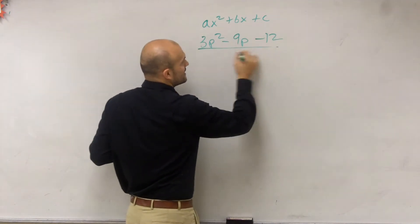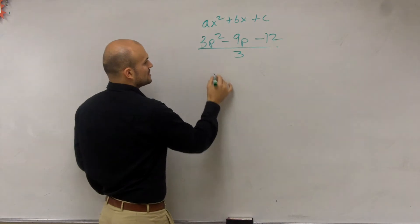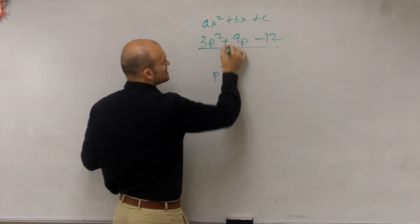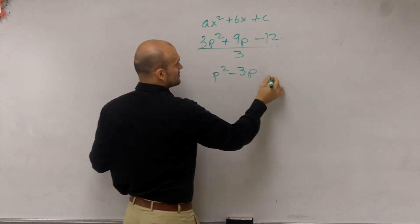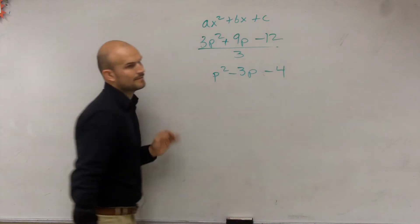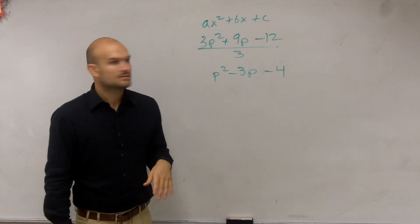So what I can do is I can divide everything by three. So really I get p squared, oh, that's a plus, right? Plus 3p minus 4.